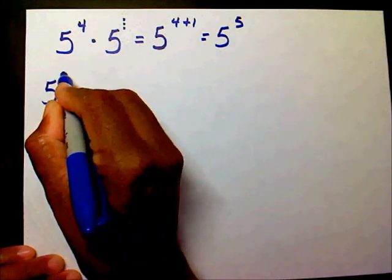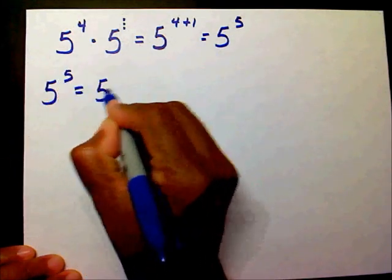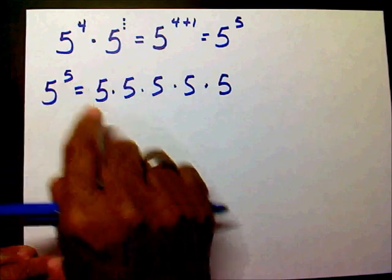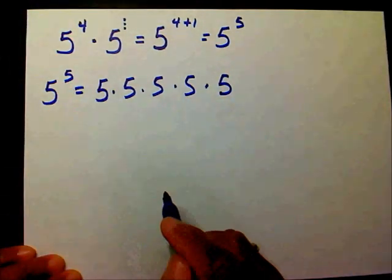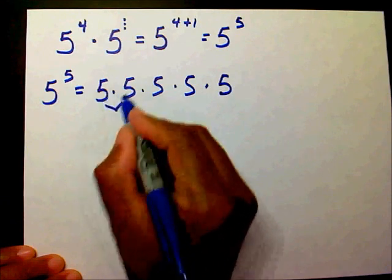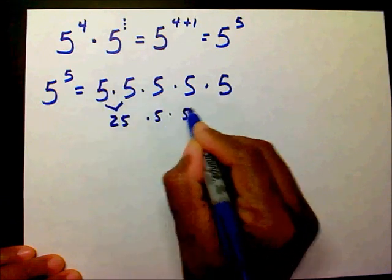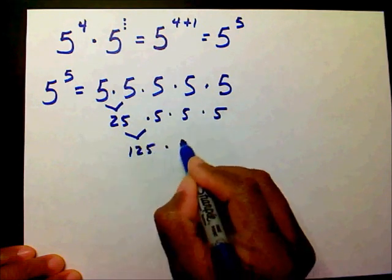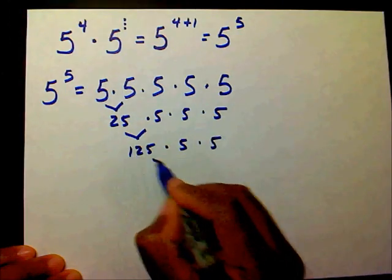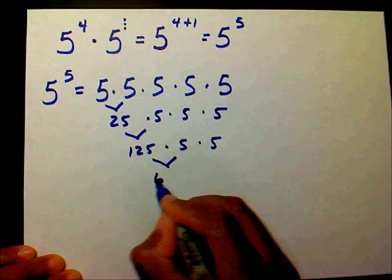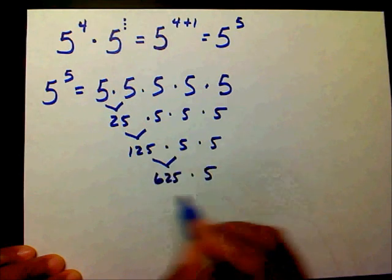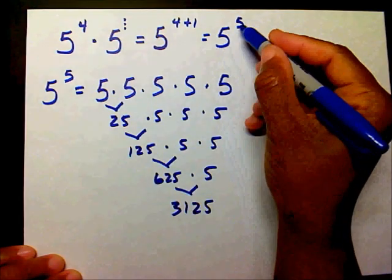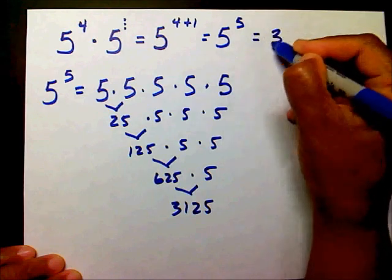We know that we have 5 to the fifth power, so we have 5 times 5 times 5 times 5 times 5 — five 5's. Let's find a solution: 5 times 5 is 25, 25 times 5 is 125, 125 times 5 is 625, and 625 times 5 is 3,125. So therefore, 5 to the fifth power equals 3,125.